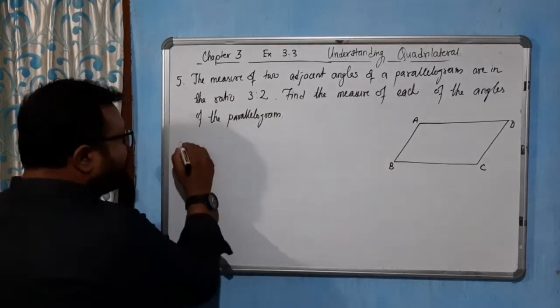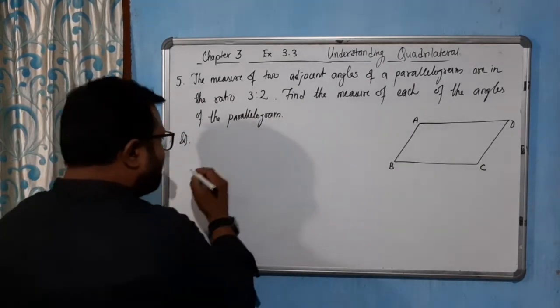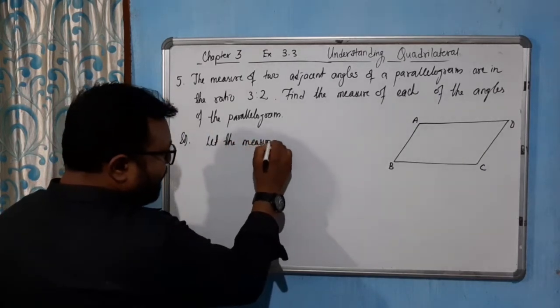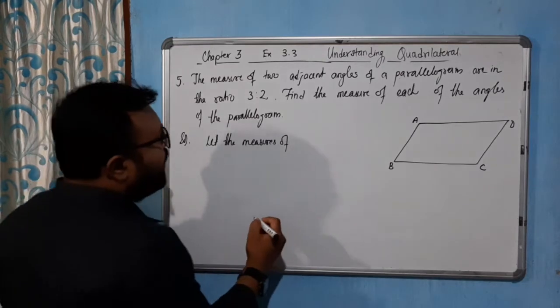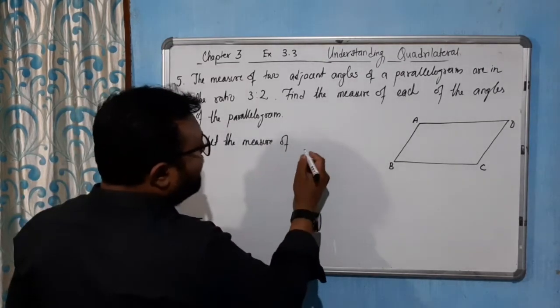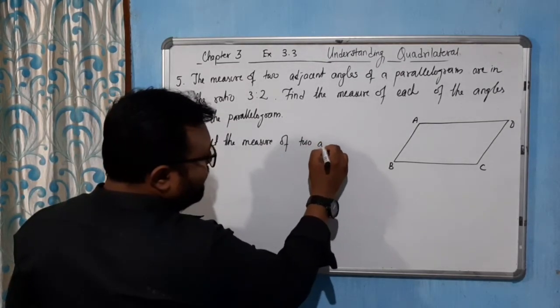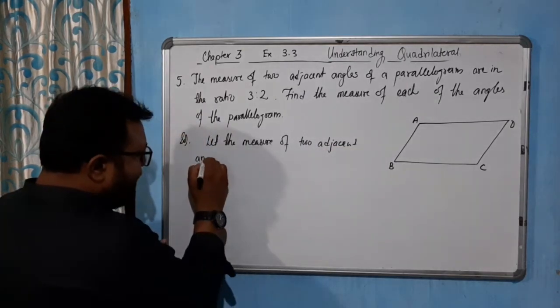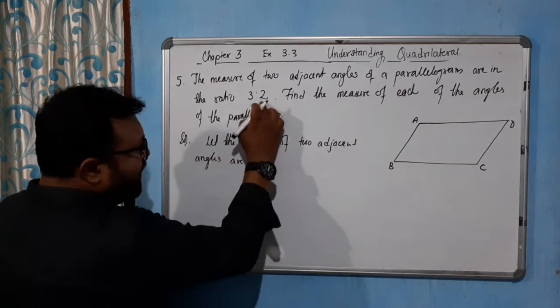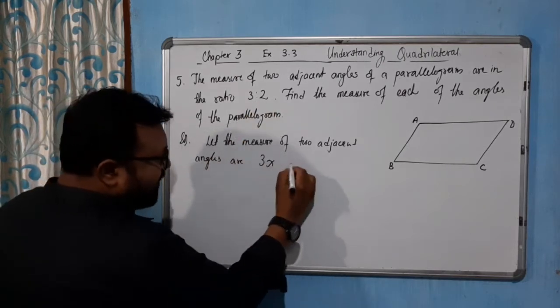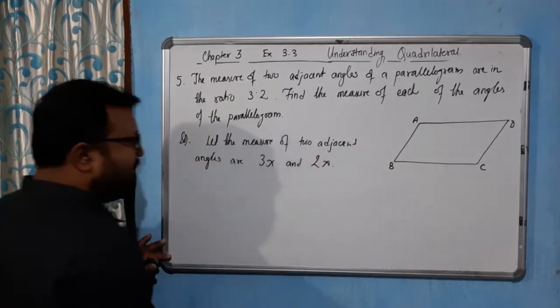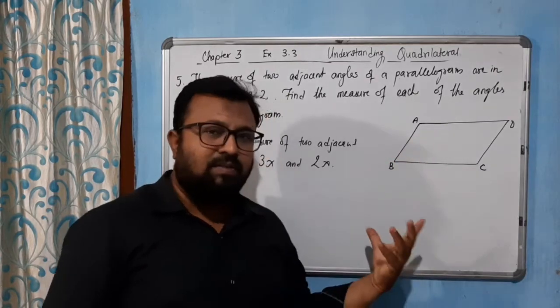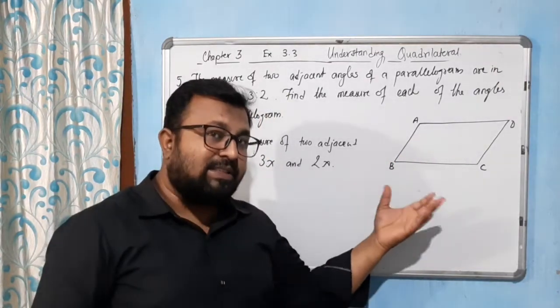Solution: Let the measures of two adjacent angles are 3x and 2x. Now we know that in a parallelogram the sum of the adjacent angles is equal to how much? They are supplementary.